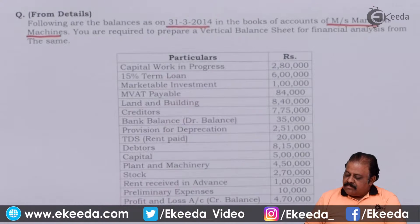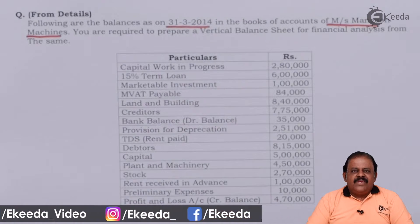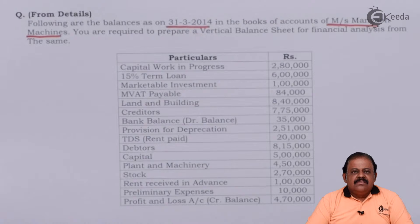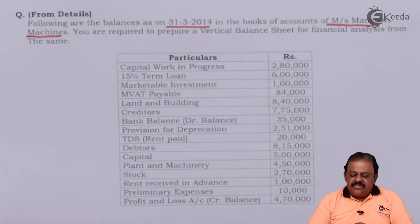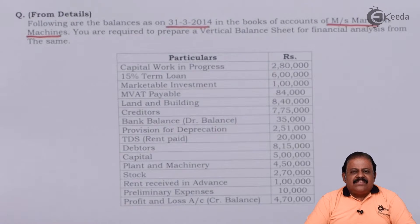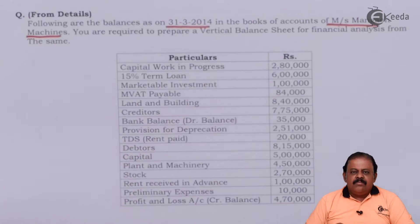Capital work in progress — what is the meaning of this item? In accounts, we give treatment as fixed asset. It is something where an organization has invested an amount to create or purchase a new asset, which may be tangible or intangible, described as capital work in progress. For example, if we decide to construct a building and give 50 lakhs rupees to the builder, this will be treated as capital work in progress.